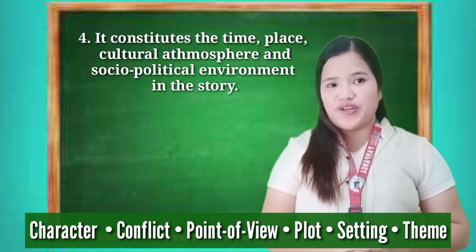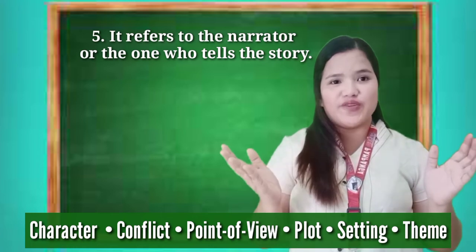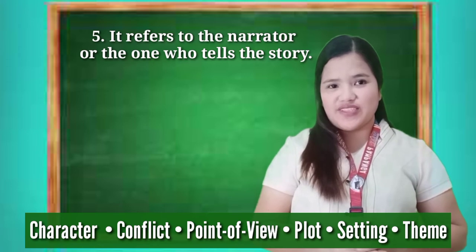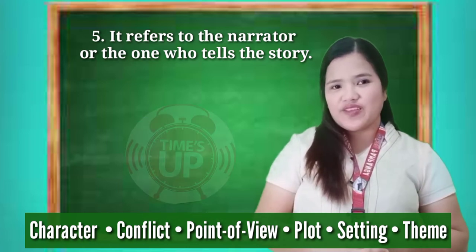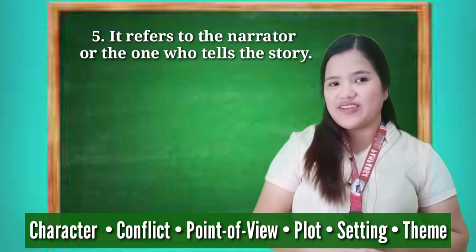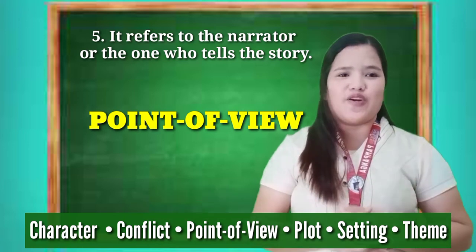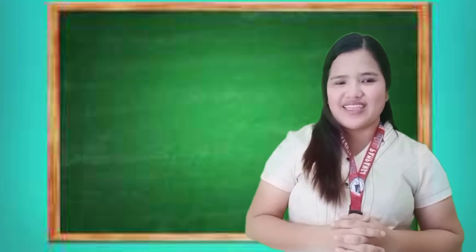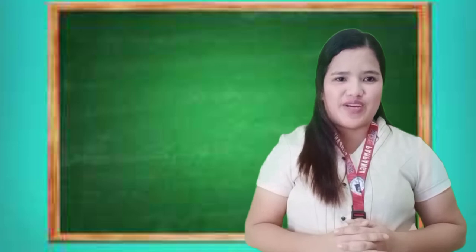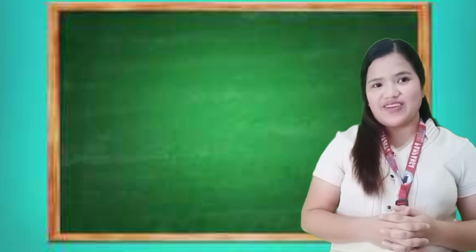Setting — very good. For number five, it refers to the narrator or the one who tells the story. Your timer starts now. Time's up. If your answer is point of view, you are correct. Who got five over five? You are excellent. Four over five? Still very good. Three over five? Good. You did well in our first activity. That's a good job — keep it up until the end of this video lesson.